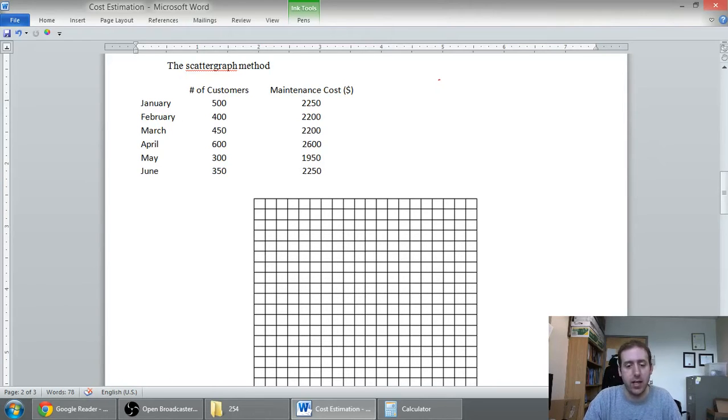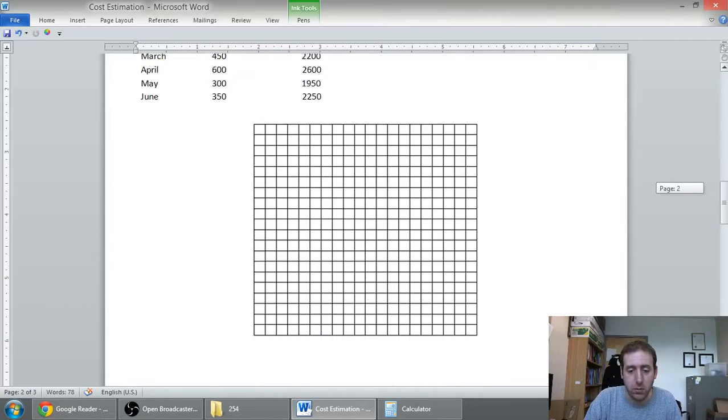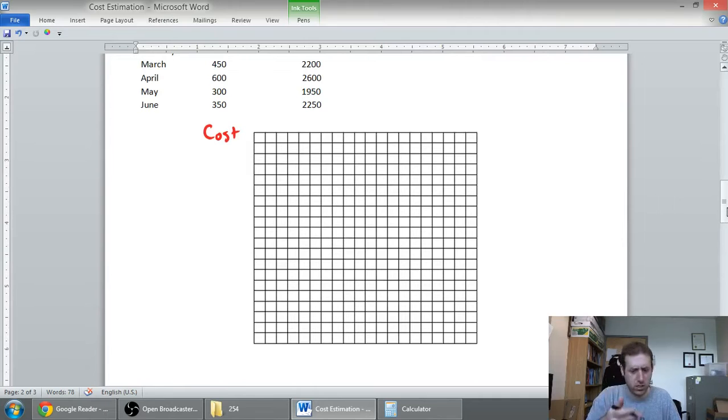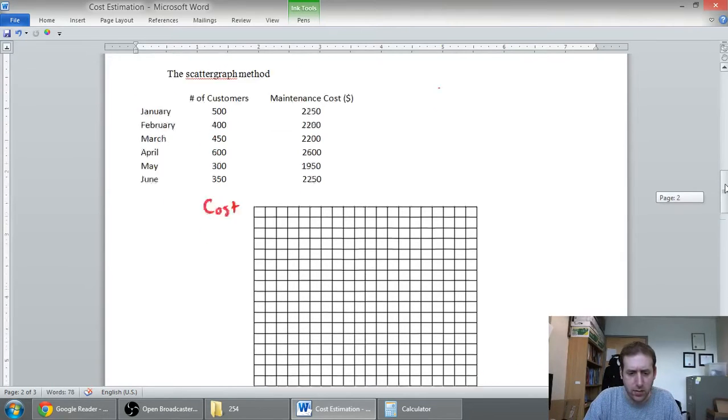Now, I've copied the data down just to be right beside the graph. I've also got a copy of this worksheet and the graph paper for you to use. But let's do the scatter graph method. Remember, we're just going to graph this data and remember what our graph needs to look like. Our y-axis is our cost axis. Our x-axis, left to right, is our activity level. And in this case, the activity level is the number of customers.